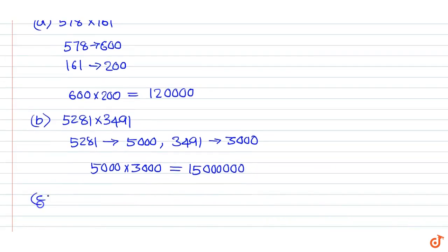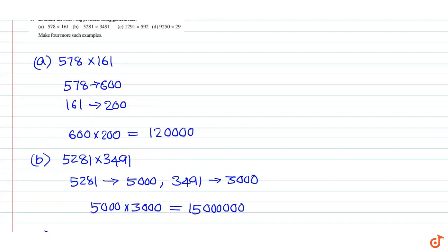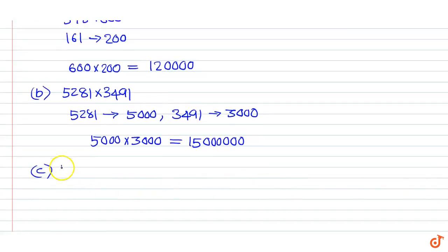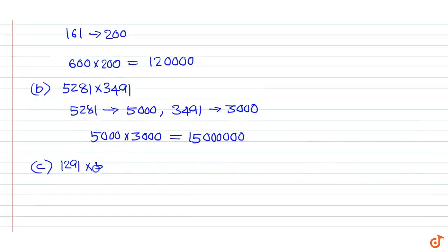Part C: 1291 x 592. 1291 can be rounded off to 1000. 592 can be rounded off to 600.